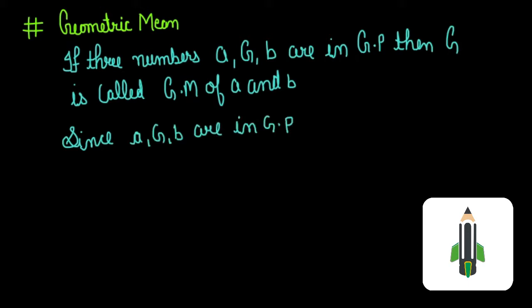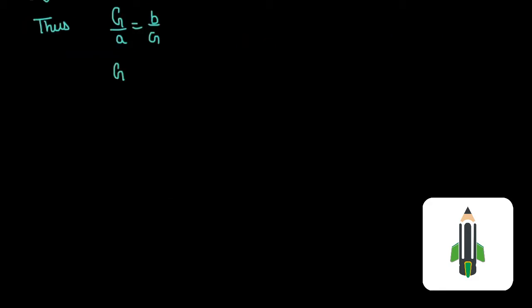Thus G by A is equal to B by G. Now cross multiplying, G square is equal to AB and the value of G is equal to under root AB.